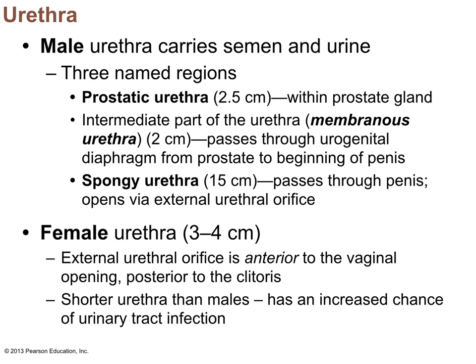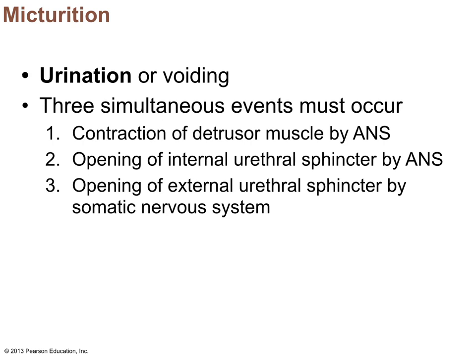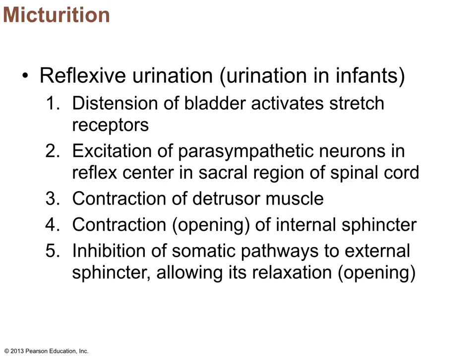Diuresis is the formation of urine, not urination. Micturition (urination) involves three events: contraction of the detrusor muscle (smooth, involuntary via the autonomic nervous system) to expel urine; the internal urethral sphincter involuntarily contracts to open; and then voluntary control of the external urethral sphincter to open for voiding.